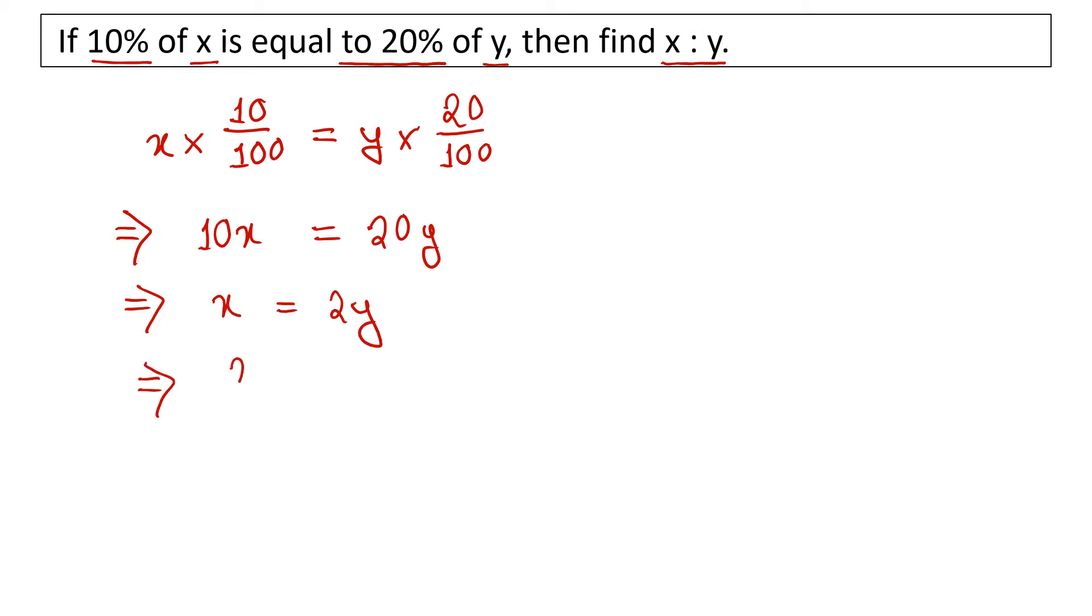So x by y is equal to 2 by 1. Therefore, x is to y is equal to 2 is to 1.